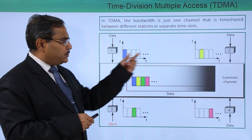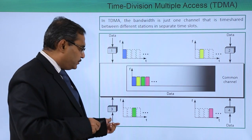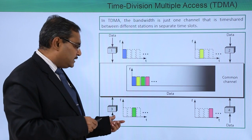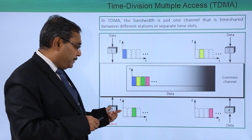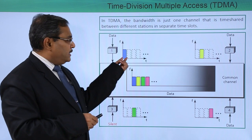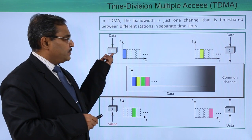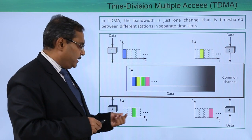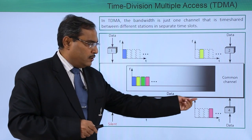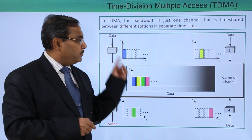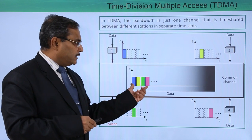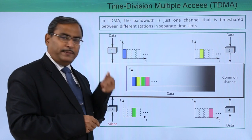Here we have station 1, station 2, station 3, and station 4, and the respective slots are allocated — first slot for station 1, second slot for station 2, third slot for station 3, and the fourth slot for station 4, with respective color matching. During transmission the slots will be allocated in this way.